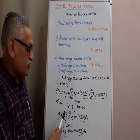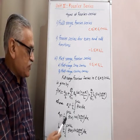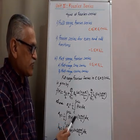Second, an equals 1 by L integral from C to C plus 2L of f(x) multiplied by cos(n pi x by L), its integration with respect to x.